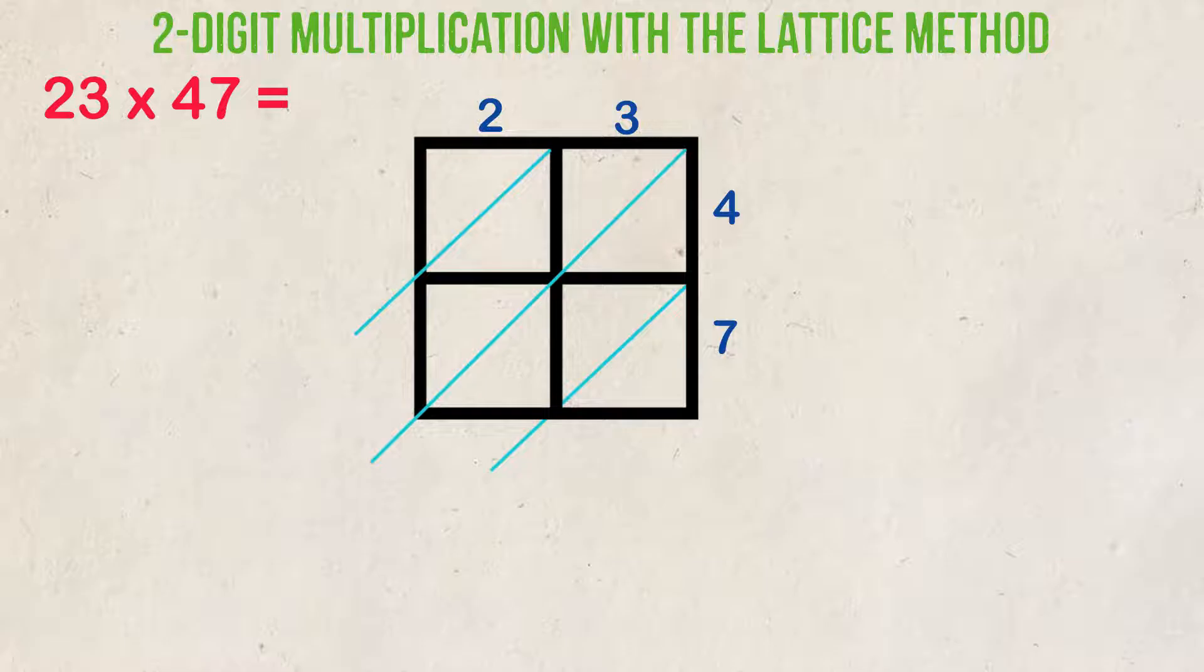The diagonal lines are drawn through each box. These diagonal lines will help in the final step isolate which numbers are in the 1s place, 10s place, 100s place, and so on.